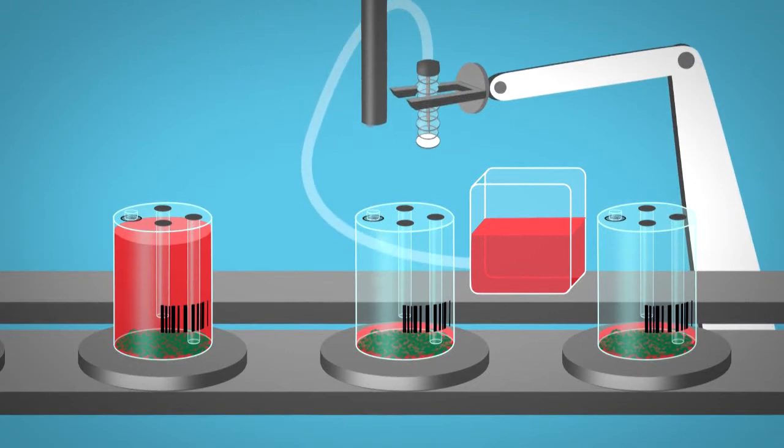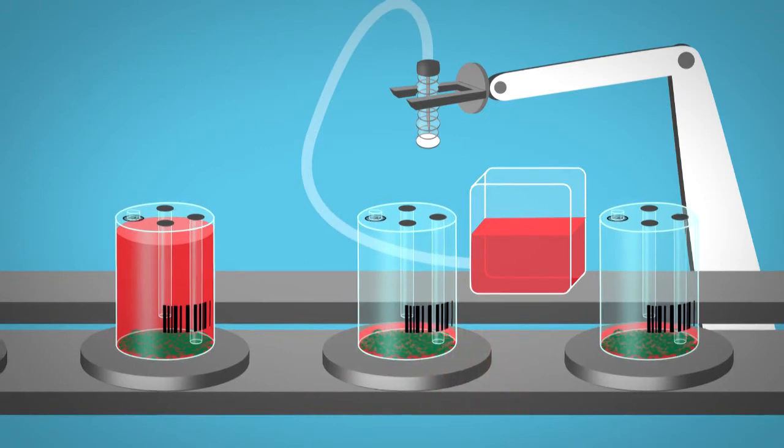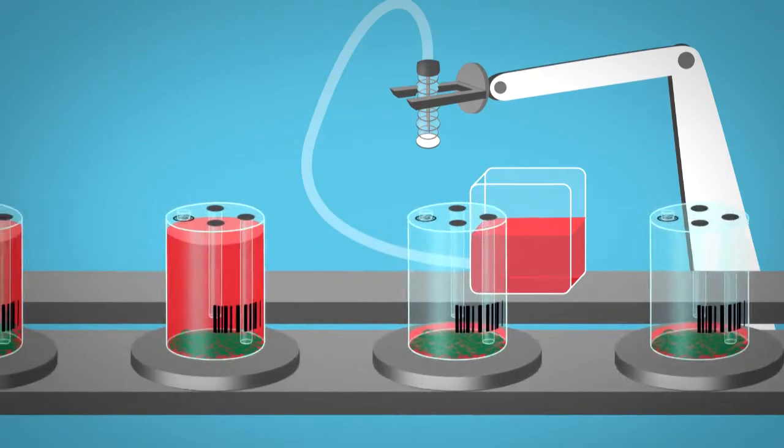To do so, a waste media collection container is docked onto the G-REX septum. Next, gas is delivered through a sterile filter to pressurize the device with sterile gas and drive 90% of the media into the waste media container.